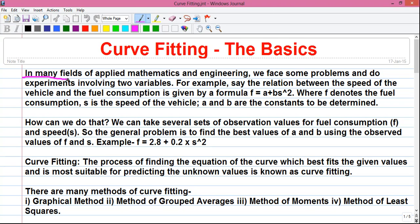In many fields of applied mathematics and engineering, we face some problems and do experiments involving two variables. For example, say the relation between the speed of the vehicle and the fuel consumption is given by the formula f equals a plus bs square, where f denotes the fuel consumption.